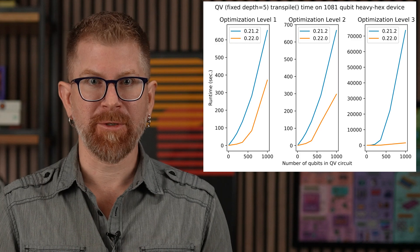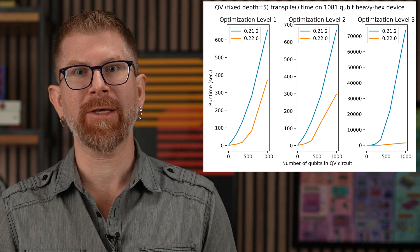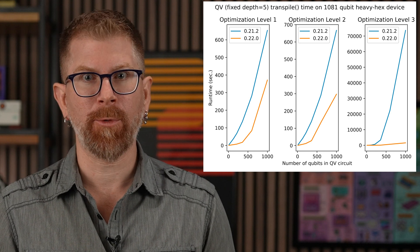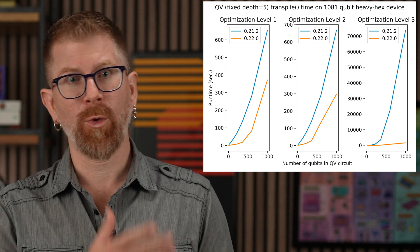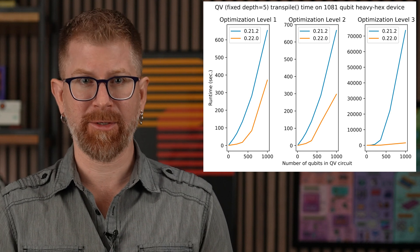The transpiler's SabreSwap routing pass has been refactored using Rust, allowing performance improvements based on multithreading. Due to these improvements, it replaces stochastic swap as a default for optimization levels 1 and 2 as well. Here are the performance improvements between Qiskit 0.21.2 and 0.22 — quite substantial as one can see.